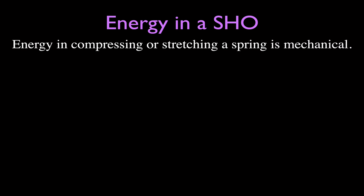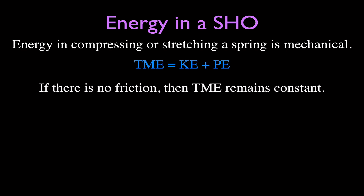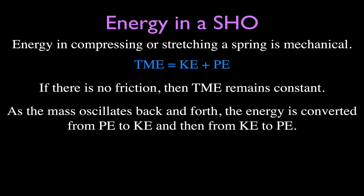We're going to be talking about energy in a simple harmonic oscillator. The energy in compressing or stretching a spring is mechanical energy, and that mechanical energy is made up of kinetic energy and potential energy. If we add the kinetic plus the potential, we get the total mechanical energy. If there's no friction in the system, the total mechanical energy will remain constant. As that mass on that spring oscillates back and forth, the energy will be continually converted from potential energy to kinetic energy, then from kinetic energy back to potential energy.